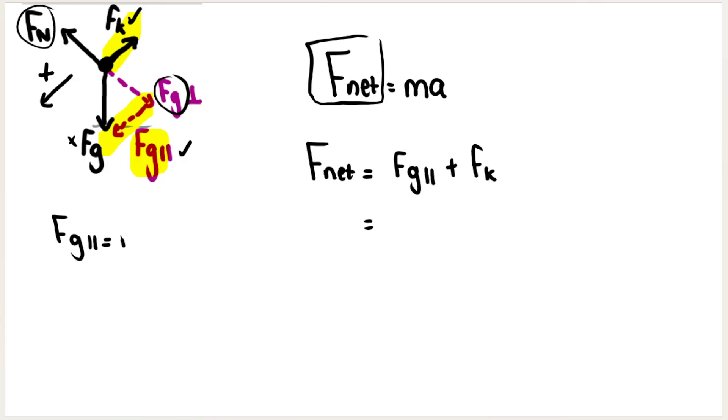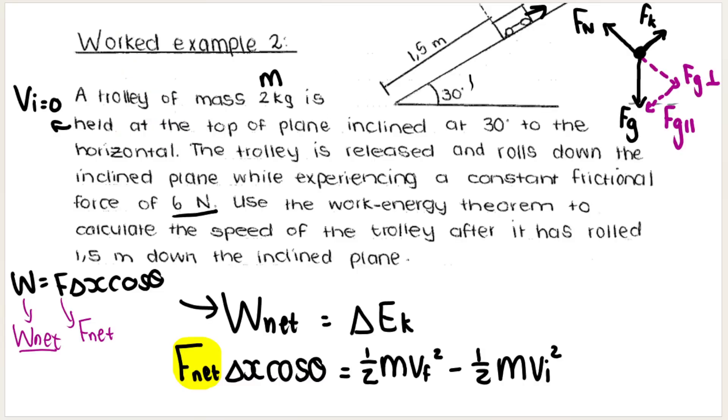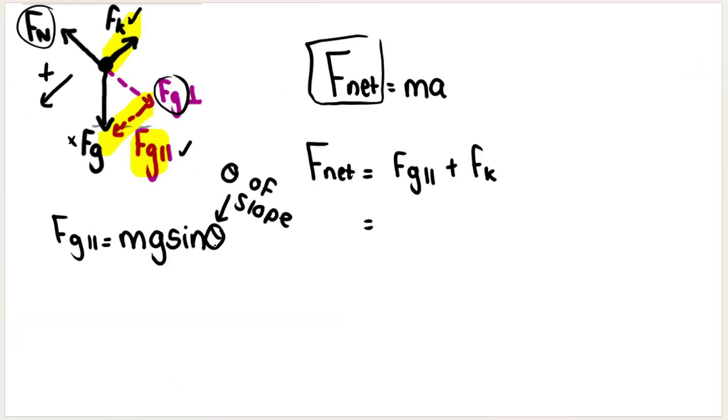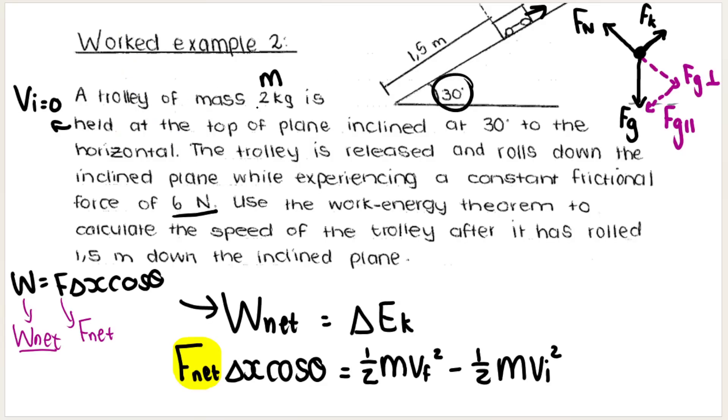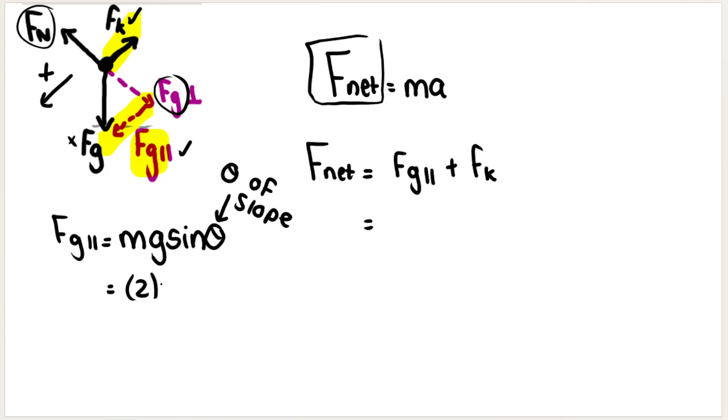What that means is that Fg parallel will be positive. Now how do you calculate Fg parallel? I've reminded you in different videos, but it's mass times gravitational acceleration times sin of the angle of the slope. For this formula θ is the angle of the slope. So let's go look - we said the slope was 30 degrees. So here θ is 30. The mass of the object is 2 kilograms, so 2 multiplied by gravitational acceleration 9.8 and sin 30.